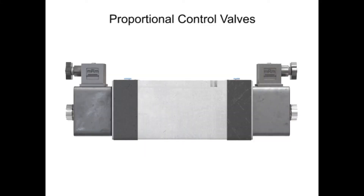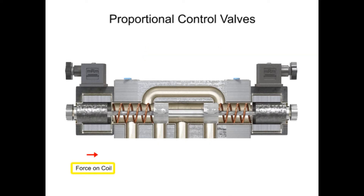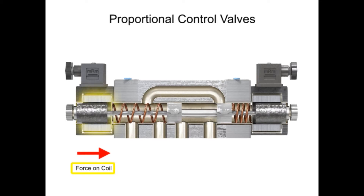Proportional control valves offer a solution to the complexity dilemma without introducing dozens of valves and hydraulic loops to the system. Physically, proportional valves appear similar to their on-off solenoid counterparts. The big difference is in the way their solenoid coils perform. Proportional coils operate on DC current and produce varying voltages that in turn produce a variable force to shift the spool.